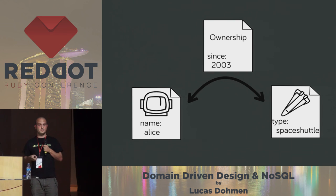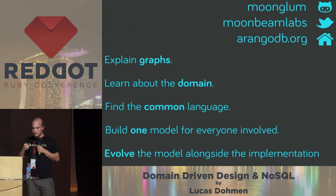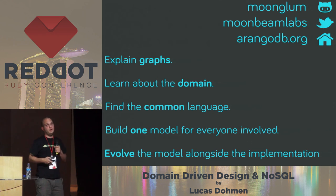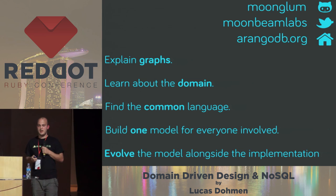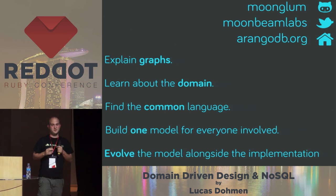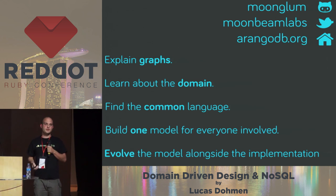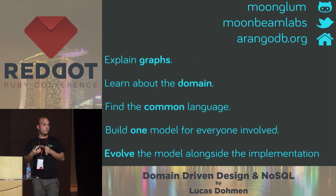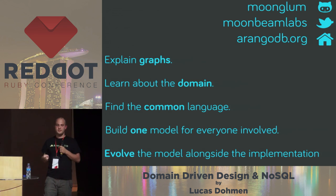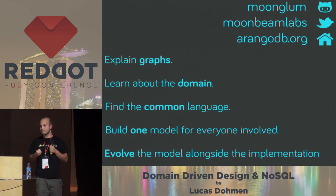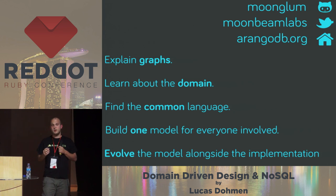The procedure I suggest is: first, explain graphs to the domain expert or product owner — say, this is how you draw a graph. This won't take long; I've done this multiple times and it's not a problem. I tried to explain joins and did not succeed so well. Then there's a very long task: learning about the domain. You talk with a domain expert and ask, what is this problem about? What words exist in this world? From that you can build a common language. You can draw on a piece of paper the graphs that belong to this language and this problem. And then you have a shared understanding — one model that everyone in the team understands.